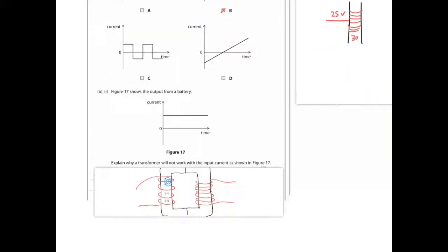Figure 17 shows the output from a battery. Explain why a transformer will not work with the input current as shown in figure 17. Well transformers do not work with the direct current source, but why?